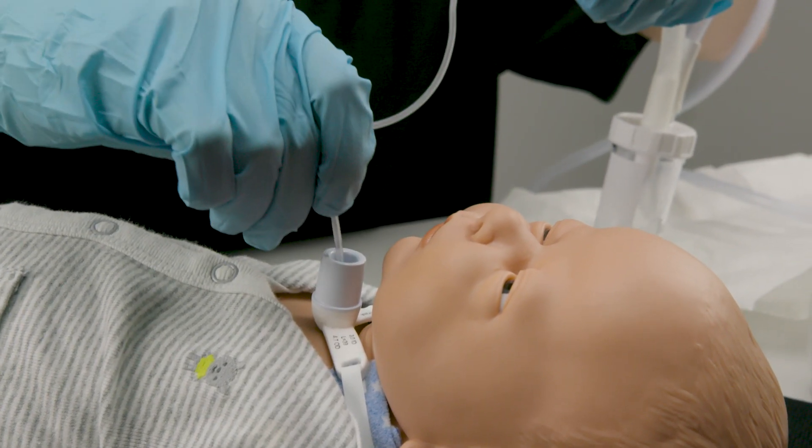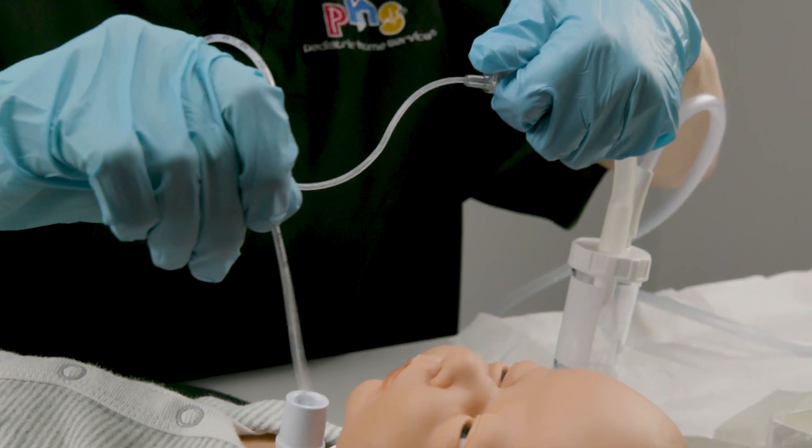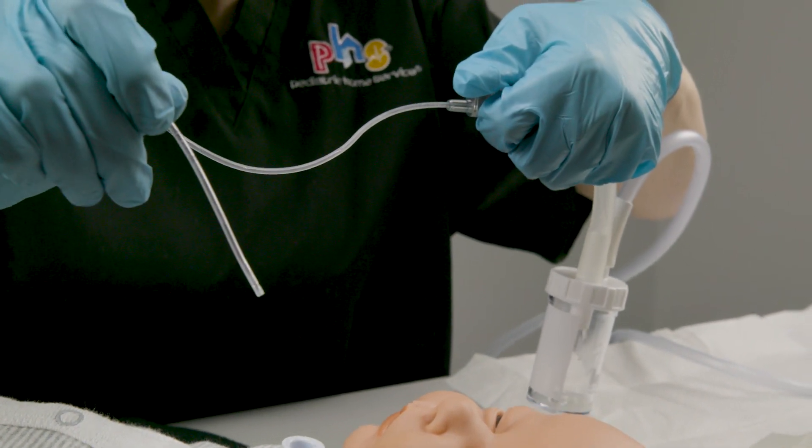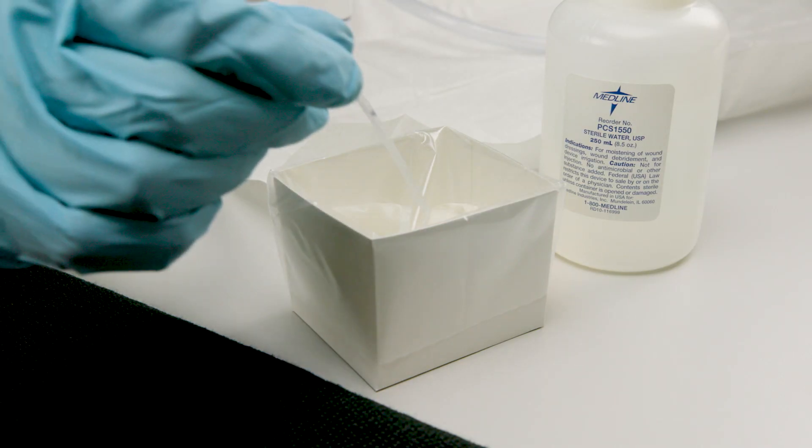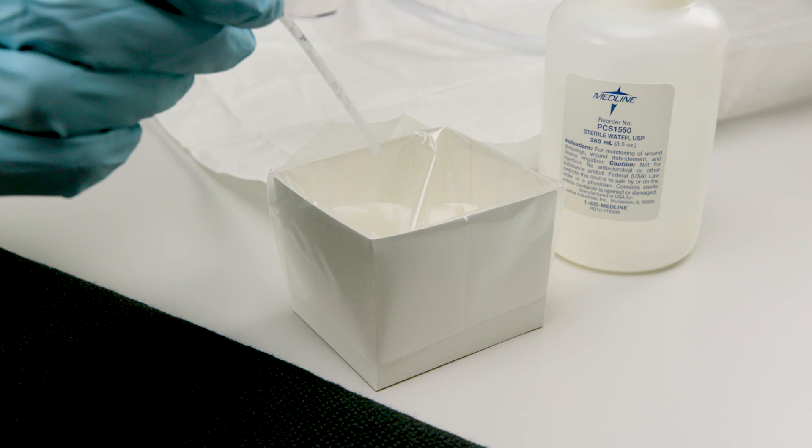When possible, collect the sample using only one pass with the suction catheter into and out of the trach tube. Use a small amount of sterile water to flush the sample into the trap only if needed.